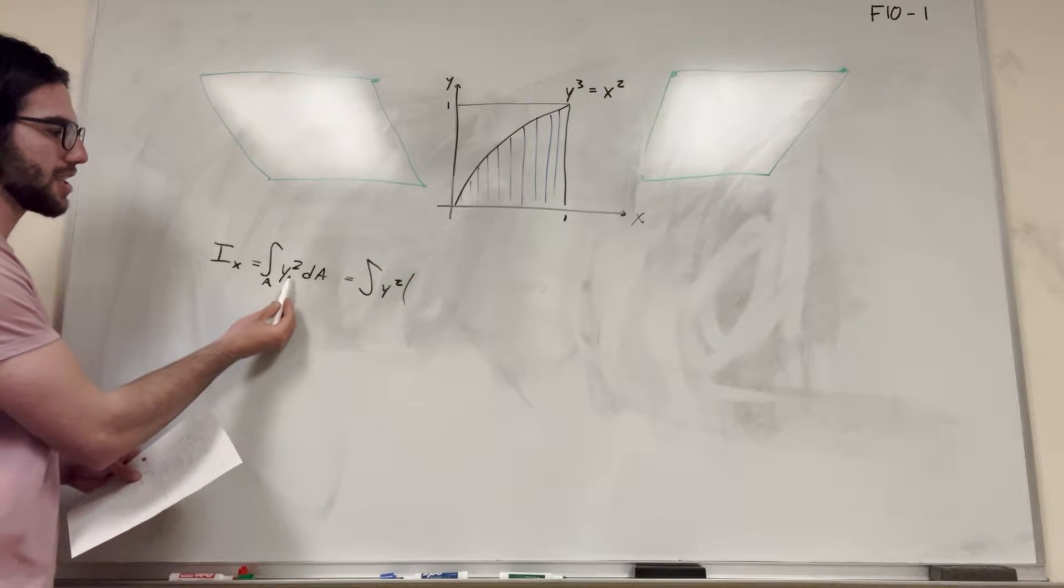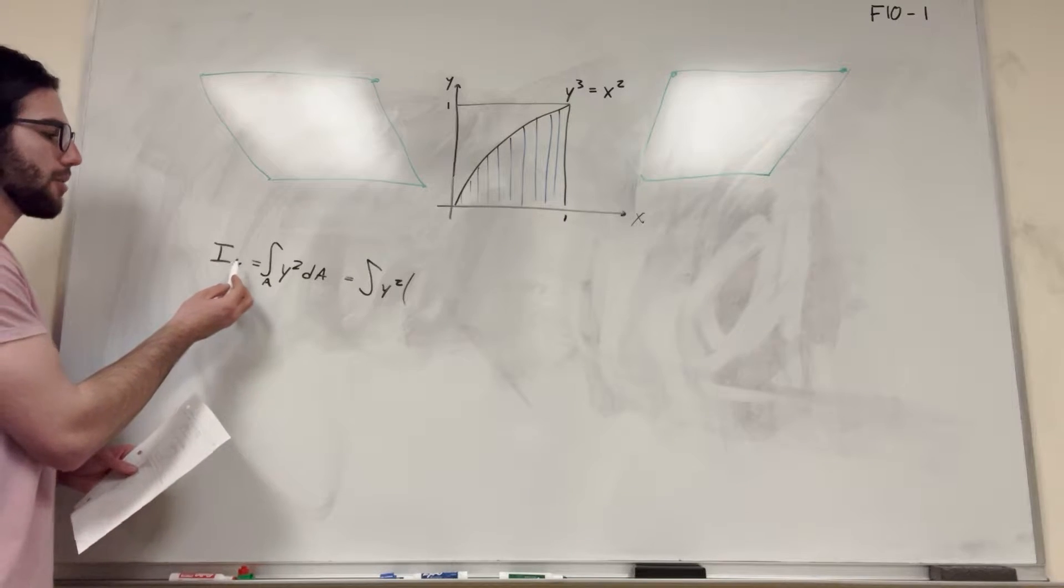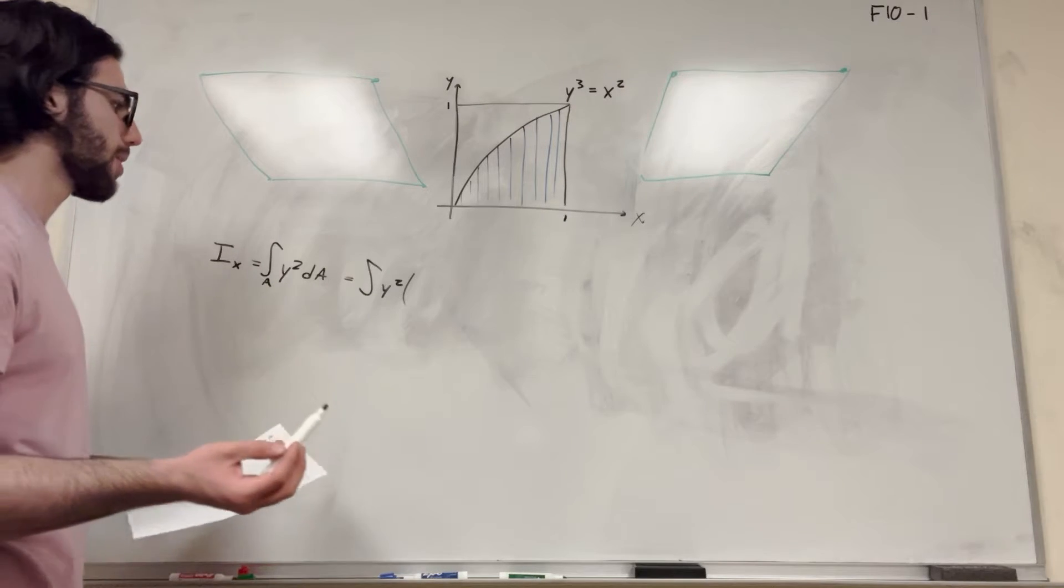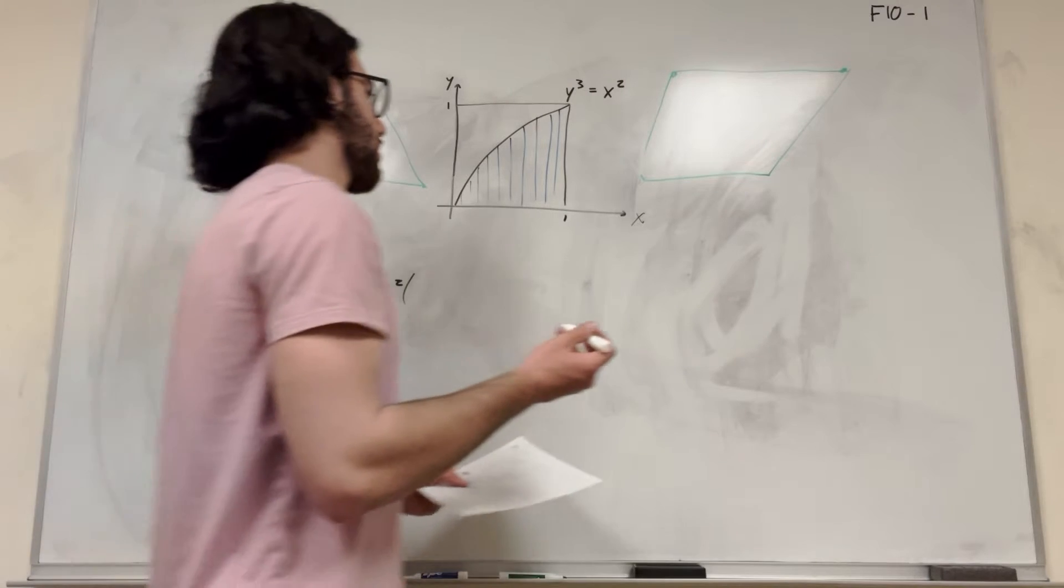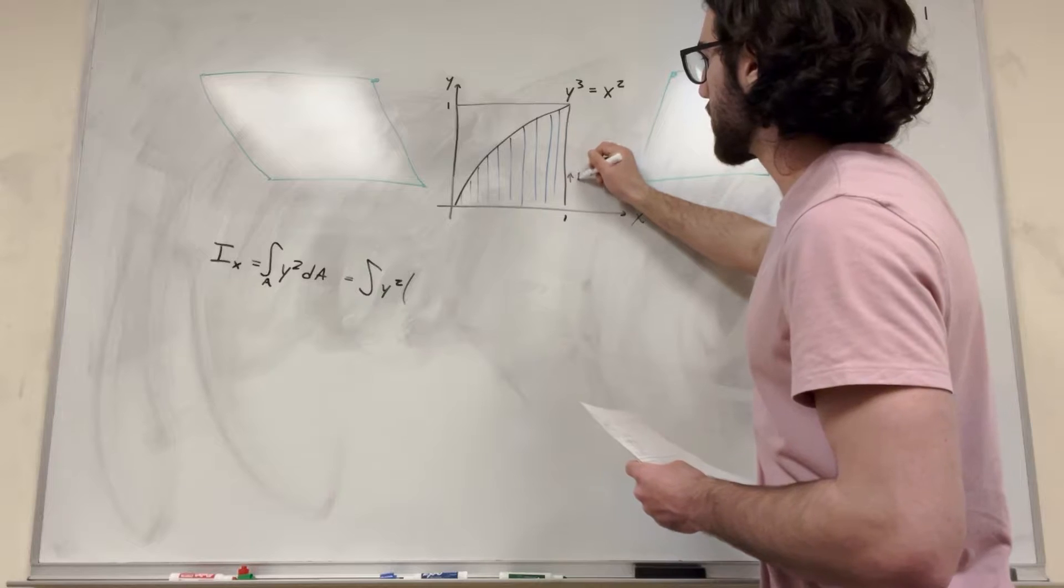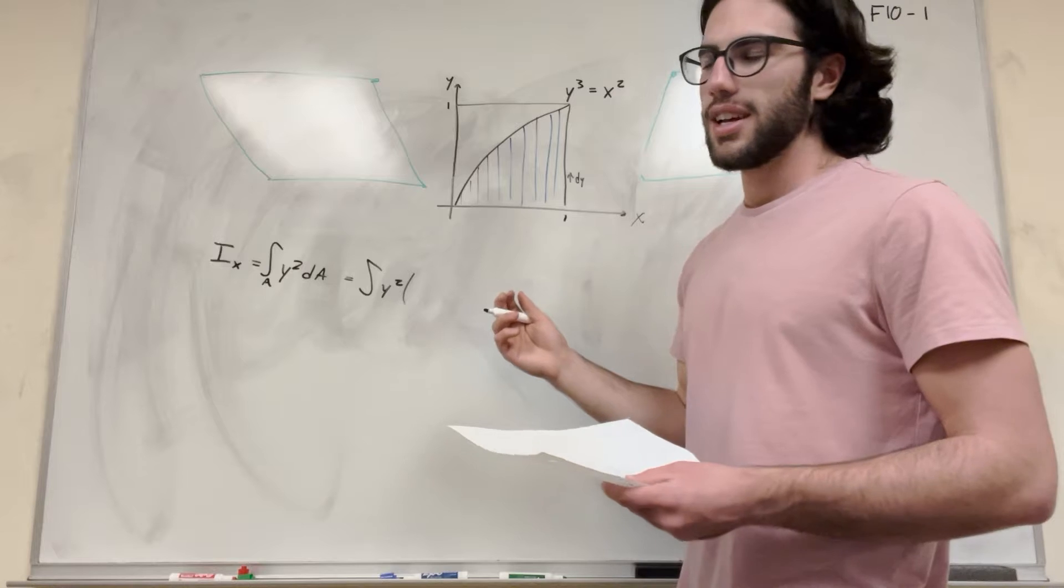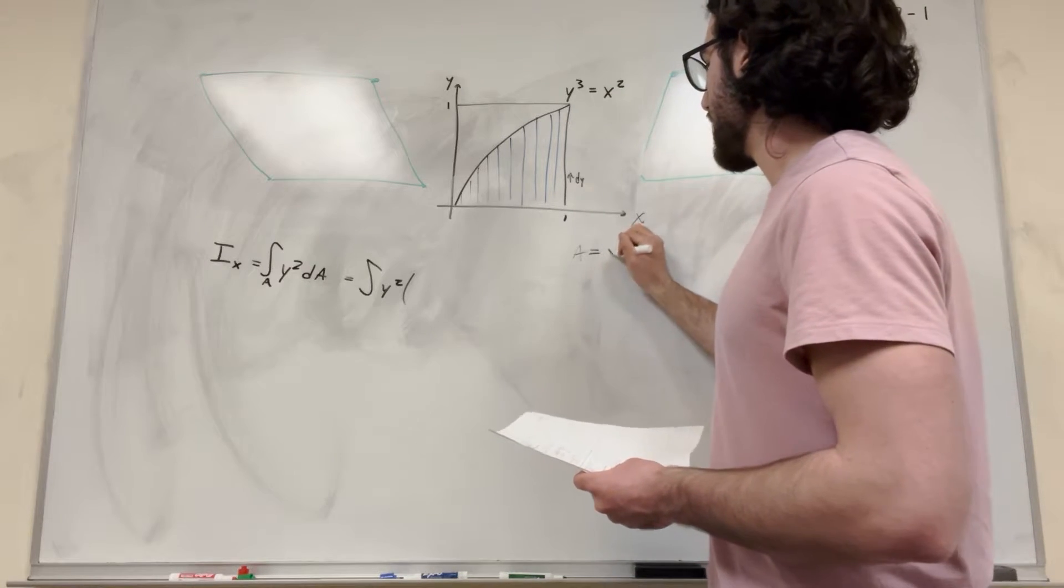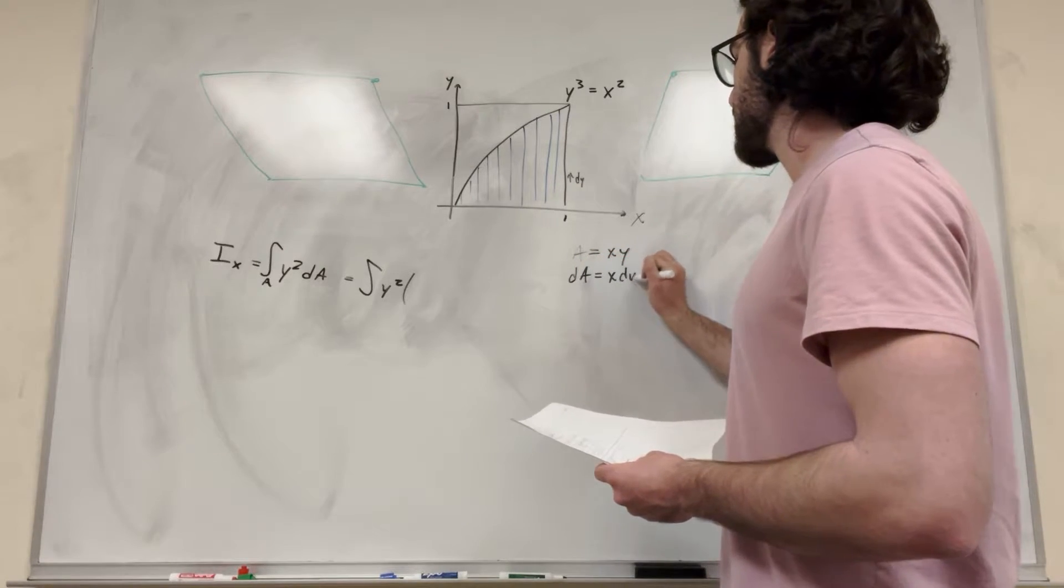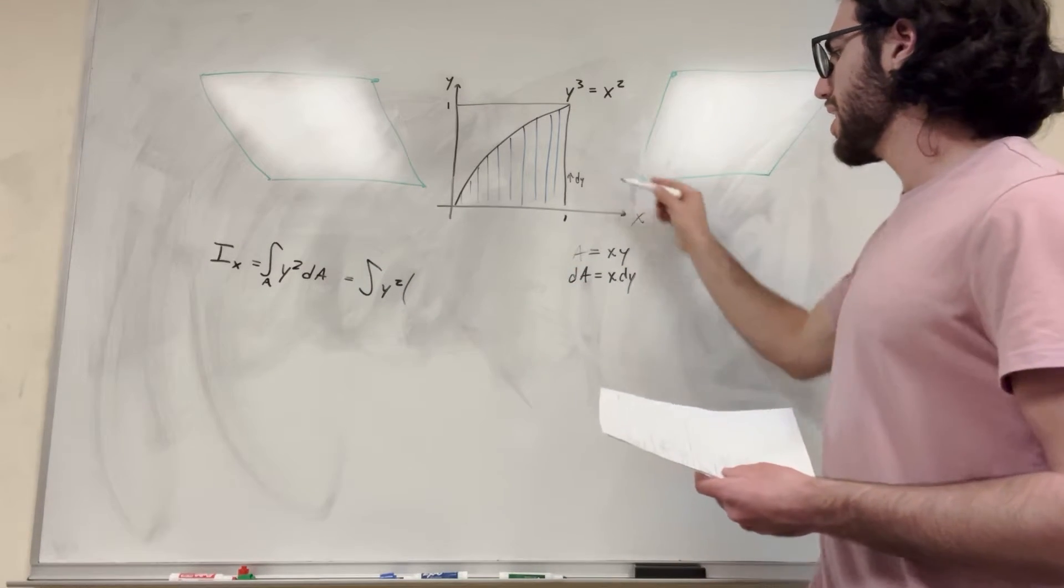But we want dy because if we're doing the moment of inertia around the x-axis, we want to integrate with respect to dy. So if we're going to integrate with respect to dy, each dy is an increment up this way. So if this is dy, we need to find x dy because x dy is the area. So if area is equal to xy, dA is equal to x dy. So now we have dA is becoming dy and we need to find what x is.